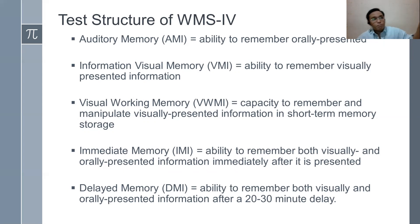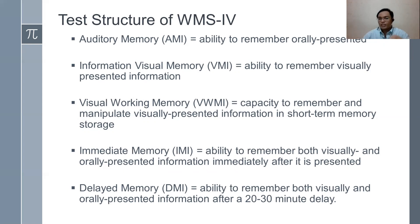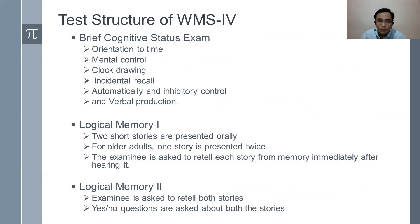One of the key features is the combination of visual and oral modalities, plus a part focused on delayed memory. Earlier parts only addressed short-term memory, but in WMS 4 there is a combination of visual, oral, retention with pen and pencil, and a cognitive status exam. The components of the cognitive status exam are: orientation to time, mental control, clock drawing, incidental recall, automatically and inhibitory control, and verbal production.